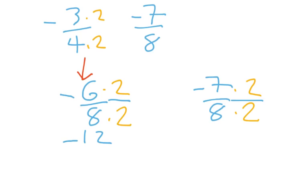And negative seven times two, that's negative fourteen-sixteenths. And I'm looking for something that would go in between those. How about negative thirteen-sixteenths?